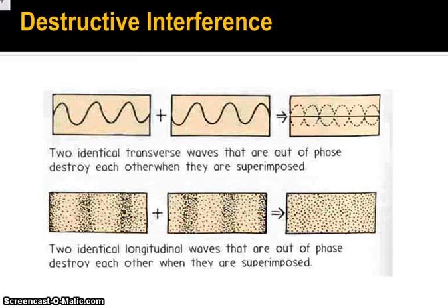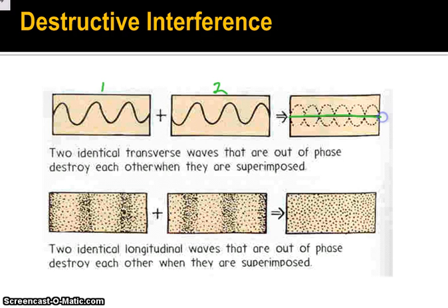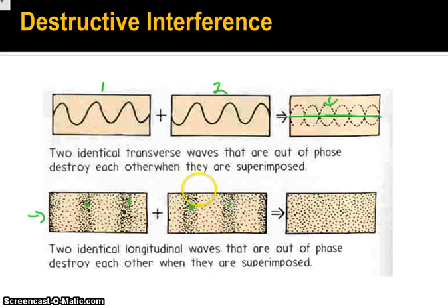On the other hand, we have what we call destructive interference, which is the exact opposite. This time our two waves are destructively interfering, producing a wave that's actually smaller. If we look at it longitudinally, we see that here were our compressions — notice they're not in the same spot in wave two as they are in wave one. As a result, we have something that seems completely out of phase, an absolute mess — no increase in intensity there.